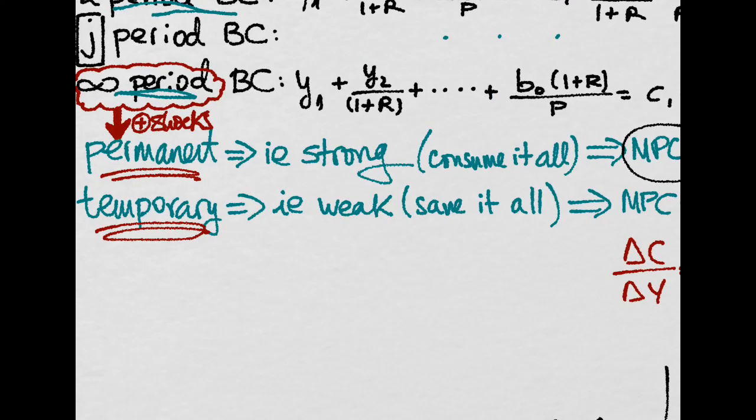If the shock was permanent, the income effect will be strong. That is, you consume it all. Why? Because you know that you will have more income in every single period of the future so you will just increase your consumption.